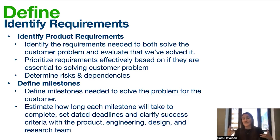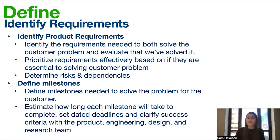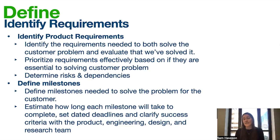Moving on in the product development lifecycle, we have the define phase, where we identify product requirements. What's important here is that we identify requirements needed to both solve the customer problem and evaluate that we've solved it — actively looking at risks, dependencies, and constraints. What is the minimum viable experience, or the most simple, lovable, and complete experience we could build? Defining milestones is a huge component of the define phase, because we want to understand how each milestone factors into a timeline. Setting dates and deadlines helps teams be high-performing and allows you to clarify success criteria with your team of product, engineers, designers, and research.